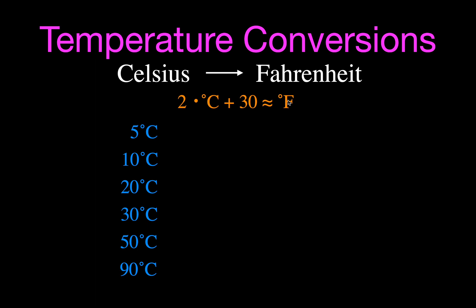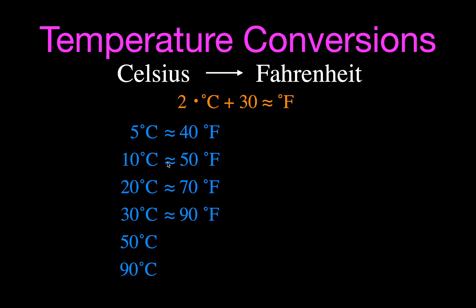Let's go through some examples using this approximation. For 5°C: 5 times 2 is 10, plus 30 equals 40°F. For 10°C: 10 times 2 is 20, plus 30 equals 50°F. For 20°C: 20 times 2 is 40, plus 30 is 70°F. For 30°C: 60 plus 30 is 90°F. For 50°C: 100 plus 30 is 130°F. For 90°C: 180 plus 30 is 210°F.